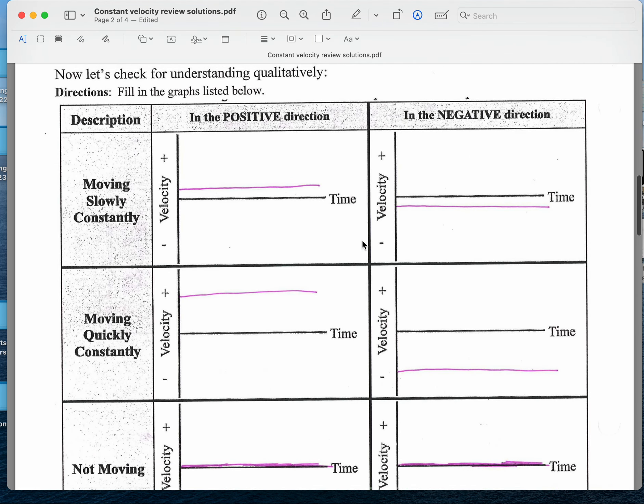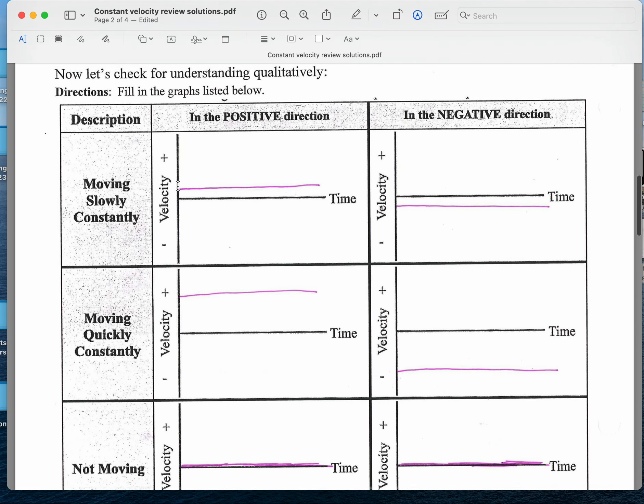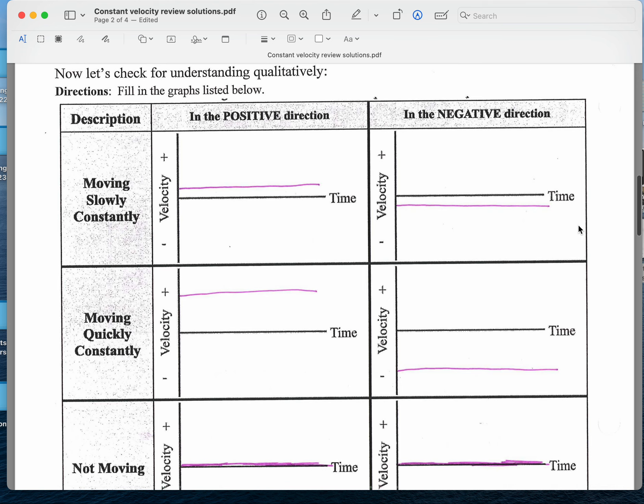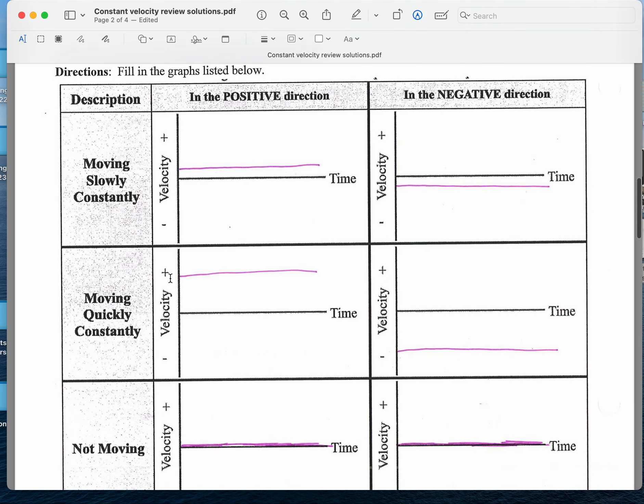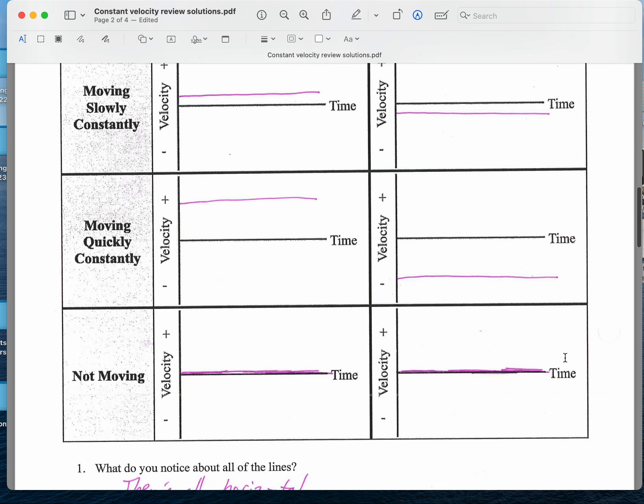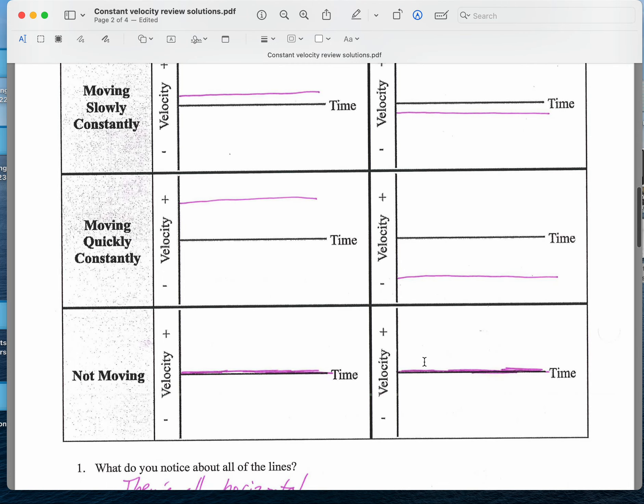Page 2 here. If I have a constant velocity moving slowly, constantly in the positive direction, it's a horizontal line a little above 0 velocity. In the negative direction, it's a little below 0 horizontal line. Moving quickly but constantly, it should be a horizontal line quite a bit above 0, quite a bit below 0 for a horizontal line for an object moving quickly in the negative direction. And not moving at all, these should be on the 0 line.